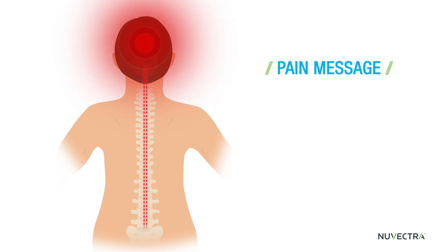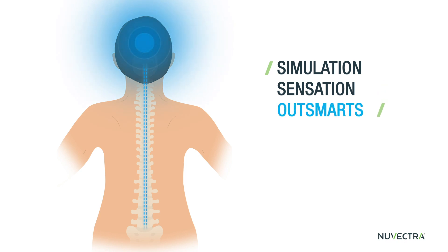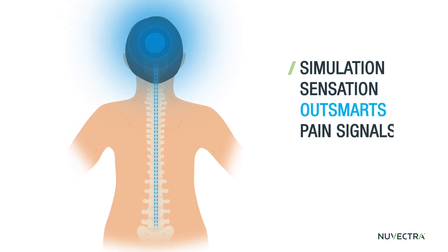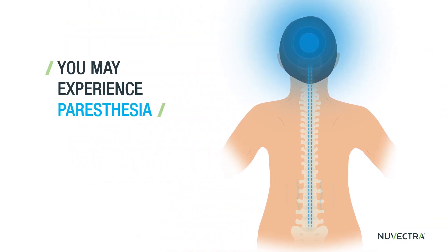Spinal cord stimulation works by generating small amounts of energy to stimulate the nerves that are sending the pain signals. The stimulation sensation essentially outsmarts your pain signals. Instead of feeling pain, you might experience what is called paresthesia, or a tingling sensation.